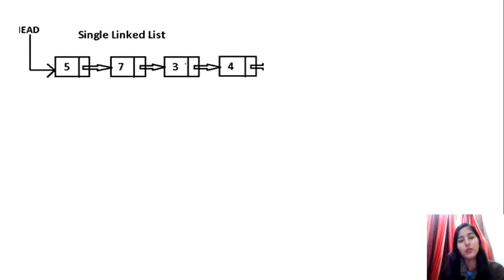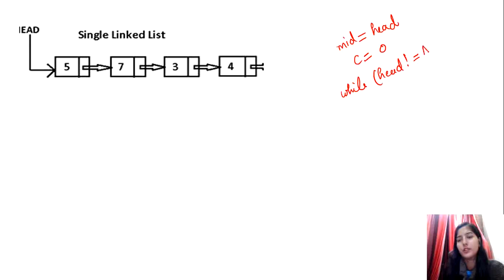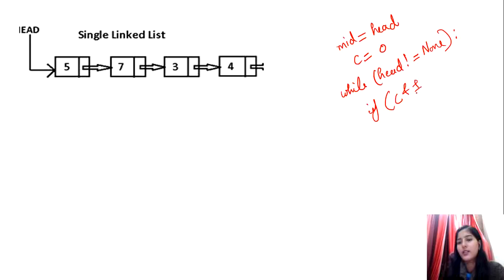Now for the second approach, which is a logical or tricky one. We take a pointer 'a' pointing to head and a counter variable 'c' initialized to zero. We run a loop while head is not equal to None. Inside the loop, we check if the counter variable c is odd using a bitwise AND — c & 1.